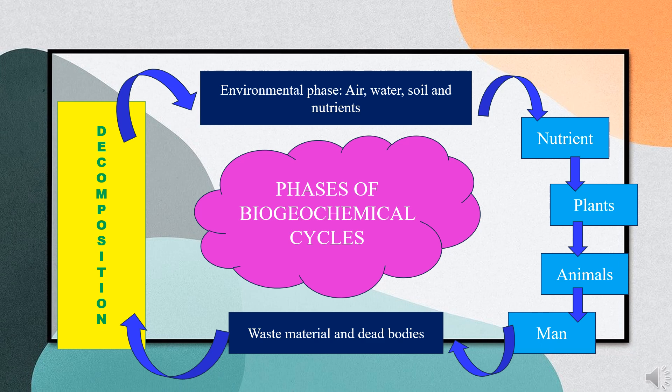Biogeochemical cycles with dominant atmospheric phases are called atmosphere reservoir cycles, while those whose sedimentary phases dominate are termed sediment reservoir cycles. Though the movement of nutrients in the abiotic phases tends to be much slower than in the organic phase, the rapidity and direction of nutrient cycling through the abiotic phases determine not only the distribution of elements in the total environment but also their availability to living systems.